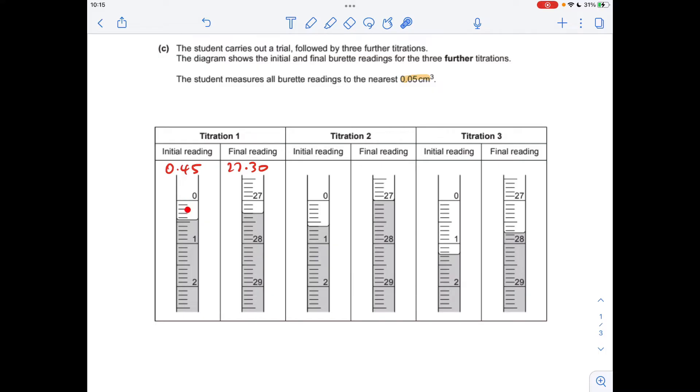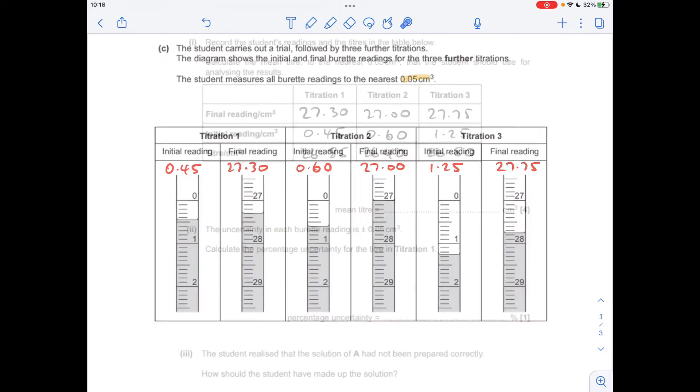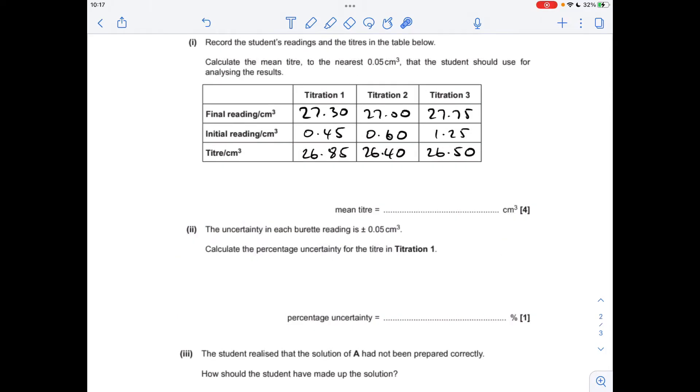So for the first one, you can see 0.1234 between the line, so 5. This one, 27.123, it's on the line, so 3, 0. Next one, 0.60 because it's on the line. Don't forget that 0, it's really important. And this one, 27.00. And for the third one, 1.25, it's between the lines, and 27.75 between the lines again.